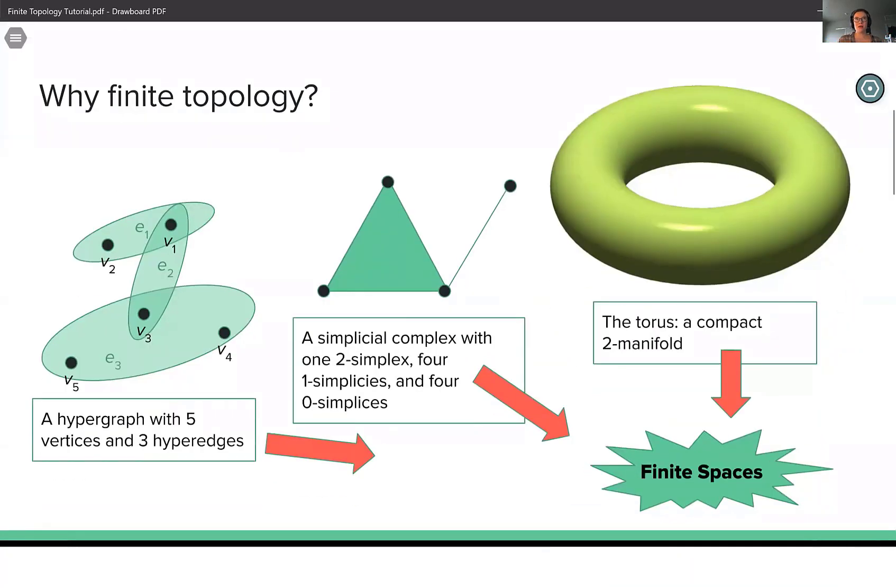Finite topological spaces are of particular interest because they can model a variety of structures from different categories. For example, hypergraphs, simplicial complexes, and a variety of manifolds can all be modeled as finite spaces, allowing for an underlying structure against which they can all be compared. So everything I've drawn here has a representation as a finite topological space.